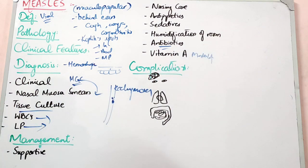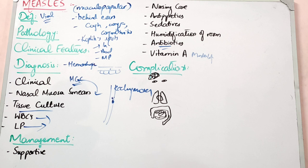A newer scheme involves giving vitamin A. When children are small, especially infants, you must give 2 lakh international units of vitamin A. For older children, you give a slightly lower dose, but you must still give it. The reason is that vitamin A has been shown to reduce the duration of the disease and prevent complications from developing.